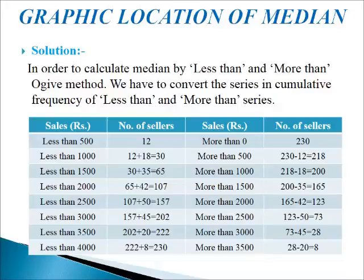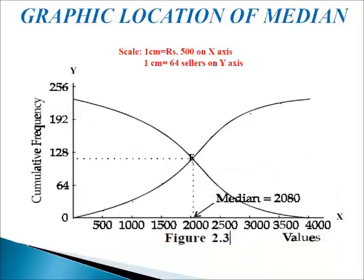In the second set of columns, we build the more than Ogive by deducting from the cumulative frequency. The total number of observations is 230. We deduct 12 from 230 to get 218 for the second row, then deduct 18 from 218 to get 200, and keep deducting until we reach the last frequency of 8. This is how we calculate less than and more than cumulative frequencies. Now we will plot this data on graph paper.